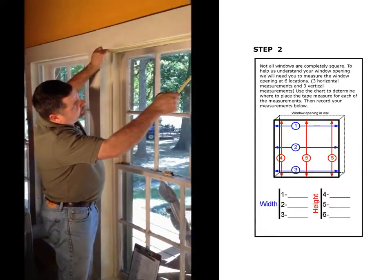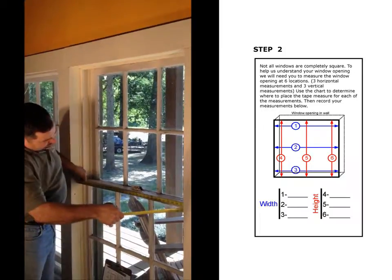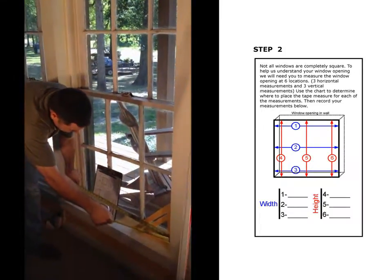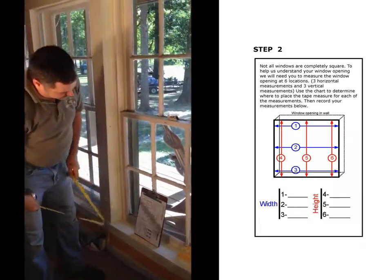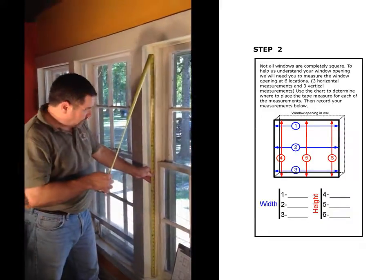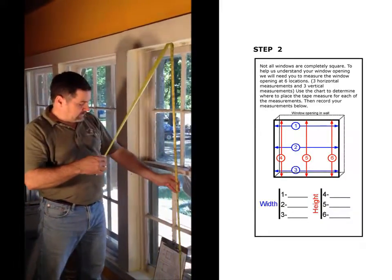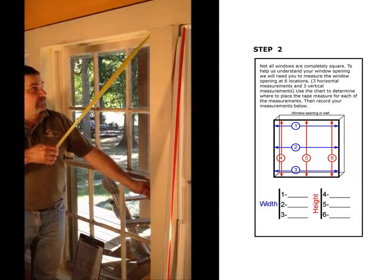The first measurement is going to be at the top, middle, and the bottom. You'll write those three numbers on there. We're going to measure on the left side, in the center of the opening, and on the right side of the opening.